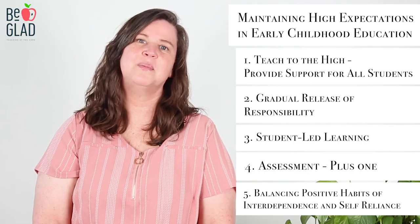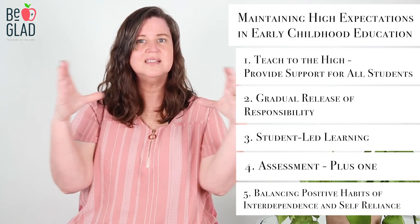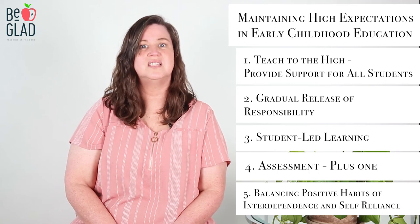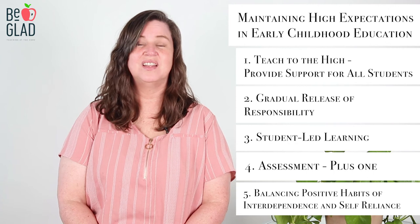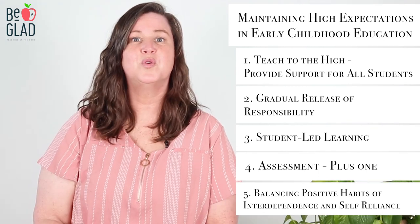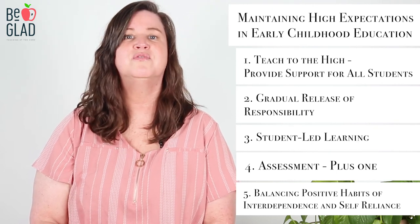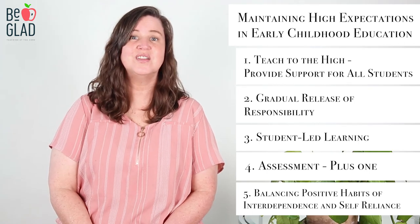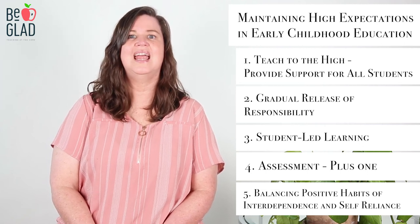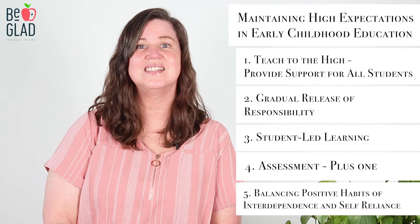Number five: balancing positive habits of interdependence with self-reliance. Classrooms with high expectations balance whole group activities, small group activities, and individual activities. Each type of activity supports learners in different ways. Modeling an activity sets the target and shows the expectations — it allows students to see what it looks like to achieve success. Small group practice allows students who need the support of their peers to practice an activity before they try it on their own. This builds soft skills for college and career readiness. They practice the skills of interdependence and self-reliance. When students find success with others, they are more likely to find success on their own.